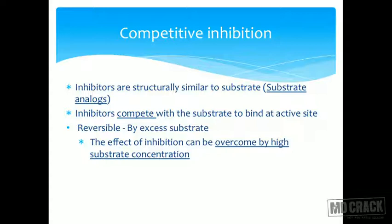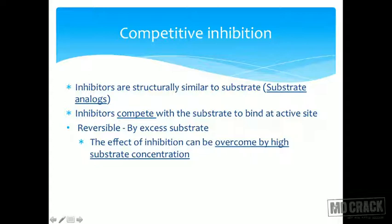The active site will allow binding if the inhibitor is a substrate analog — it gets confused whether it is a substrate or an inhibitor. There is a lot of structural similarity between the substrate and the inhibitor, so both compete to bind at the active site. Competitive inhibition is usually reversible: by adding more and more substrate, the enzyme keeps binding to the substrate and catalyzing the reaction. The effect of inhibition can be overcome by adding high substrate concentration.